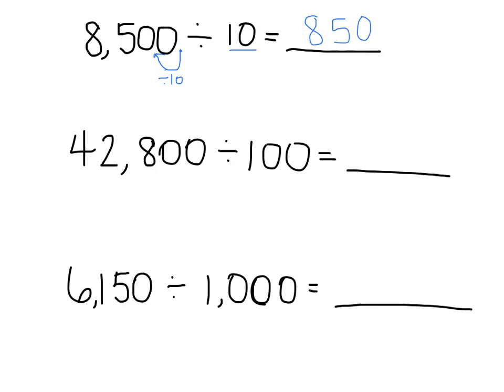Okay, here we have 42,800 divided by 100. 100 is the same thing as 10 times 10 or two groups of 10. So we're going to need to take our decimal place, move that over one place to the left and a second time, each time represents dividing by 10 once. So we now have our decimal place here and that makes our answer 428.